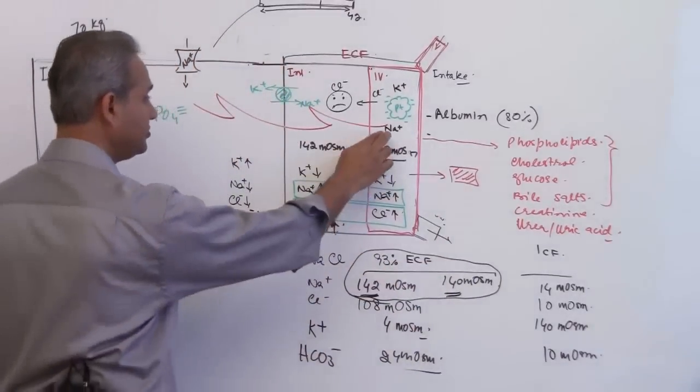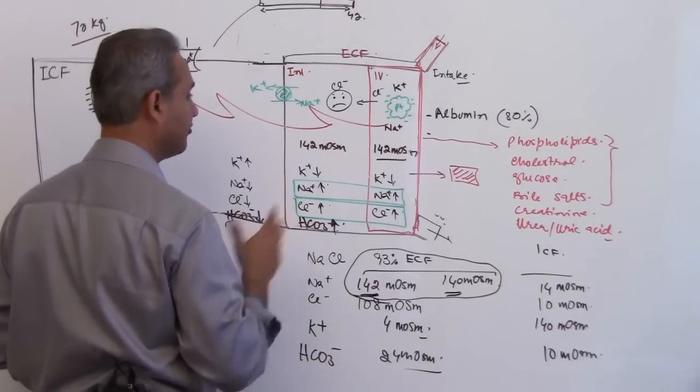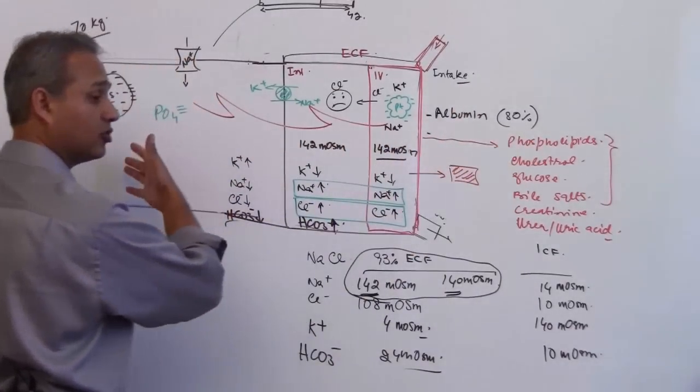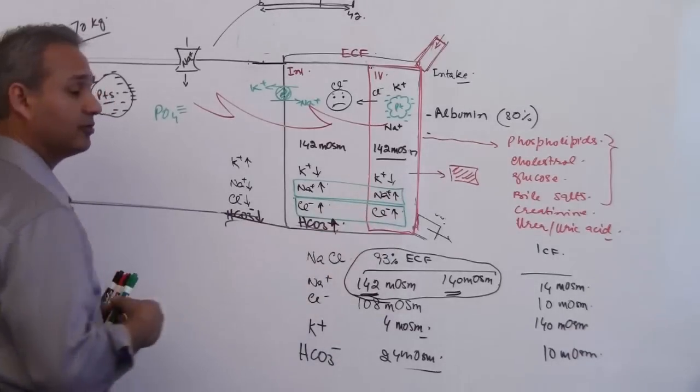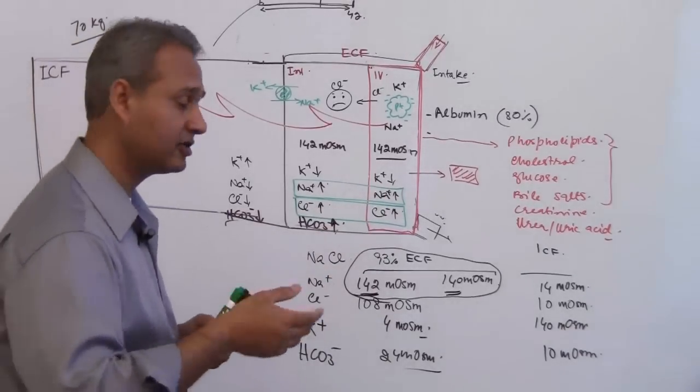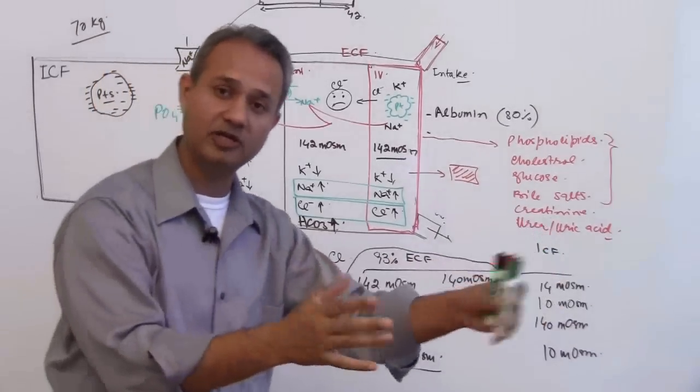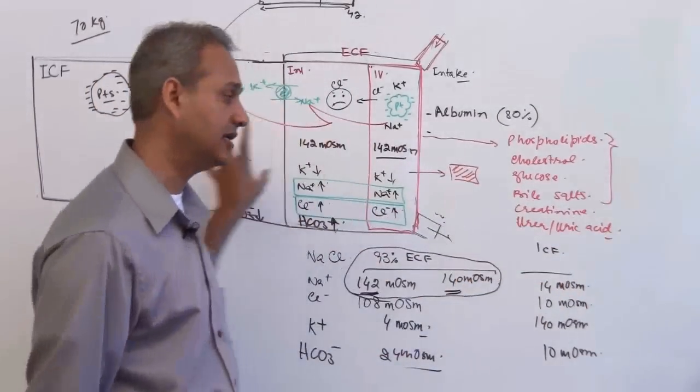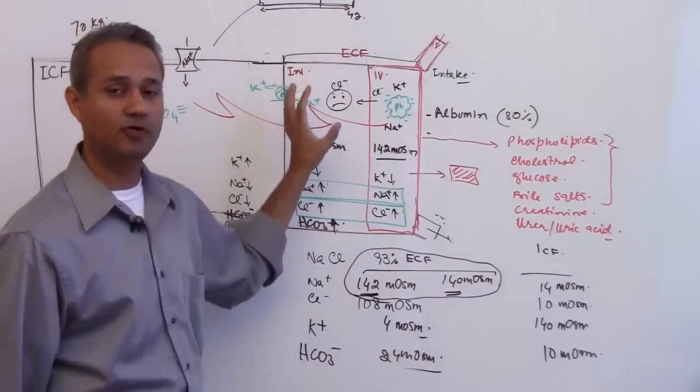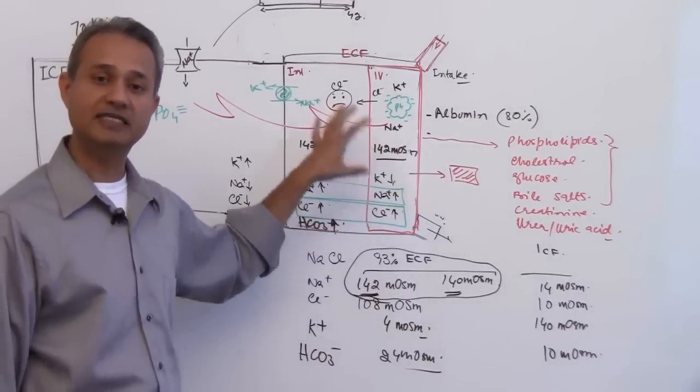So sodium, very important factor to understand - more on the outside. Potassium, very important - more on the inside. Bicarbonate, very important for acid-base balance, it is a buffering system - more on the outside. Chloride is the body of the sodium, so wherever sodium is, chloride is there - more on the outside, less on the inside. Water, of course, would follow these. These are the drivers. So water would then be following.